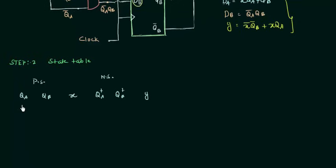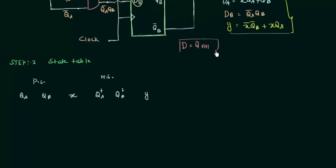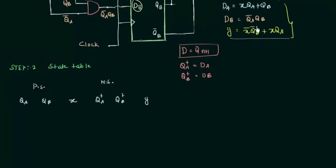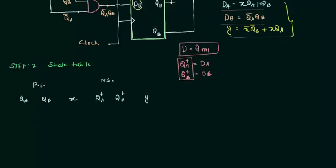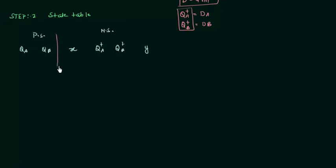An important thing is how to find the next state value. From our study of D flip-flops, the value of D equals Q at the next clock — QN+1. So the next state value of flip-flop A is QA plus equals DA, and the next state of flip-flop B is QB plus equals DB. From the input equations we already have DA and DB, so we can find QA plus and QB plus.